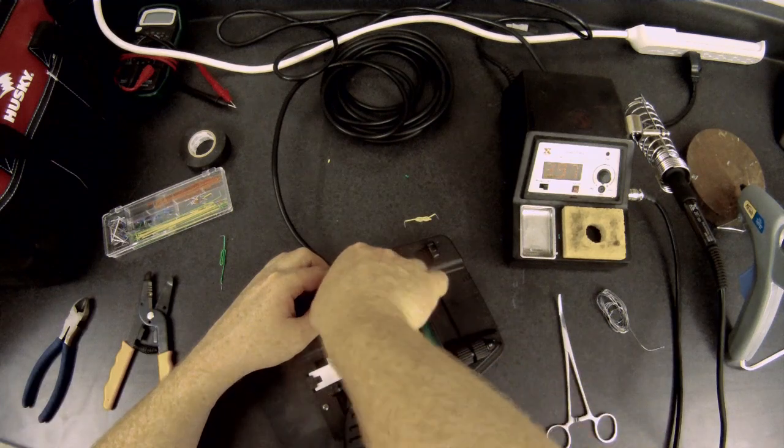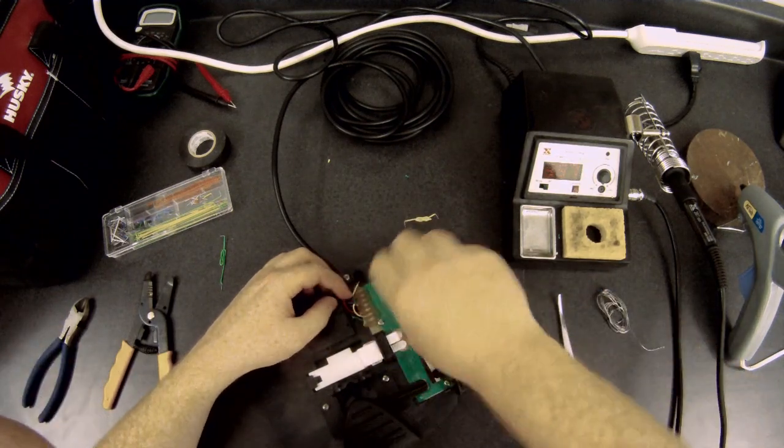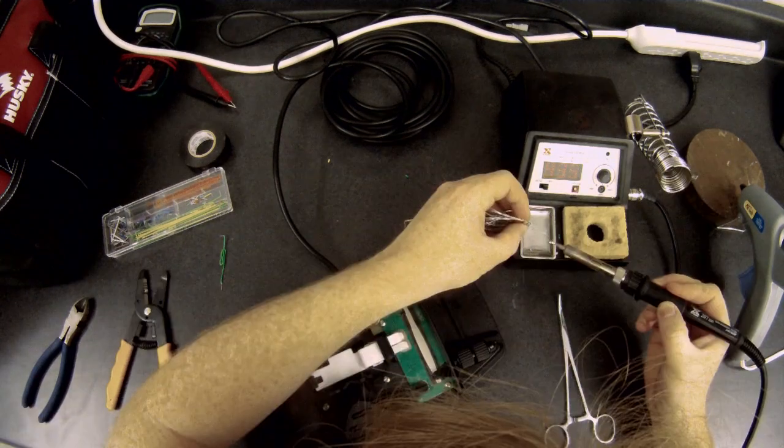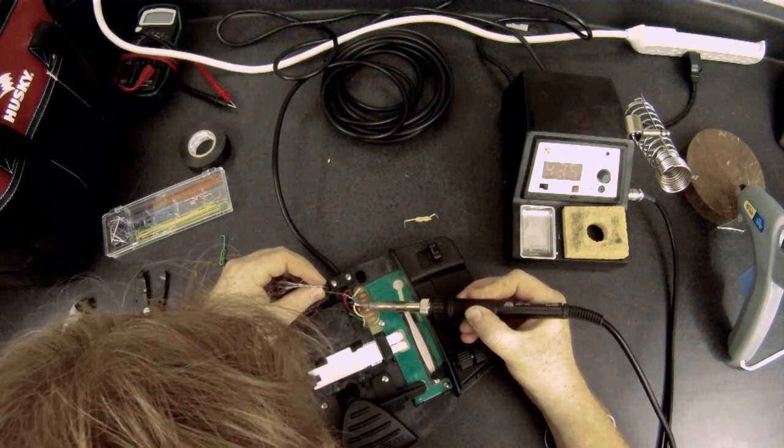After you have stripped the wires, just twist the yellow and the green together for each. I'm going to solder these wires together just to make sure that there's a good strong connection and that nothing will pull apart.